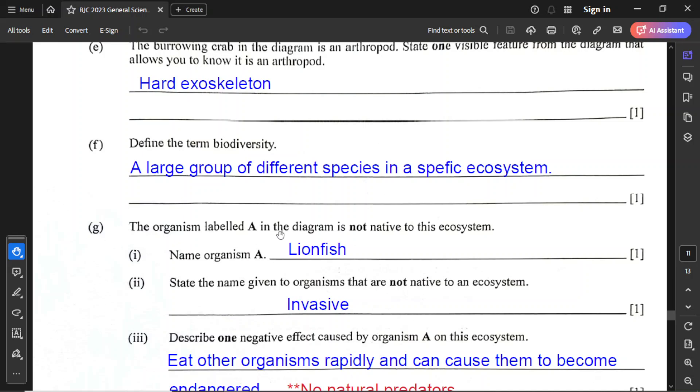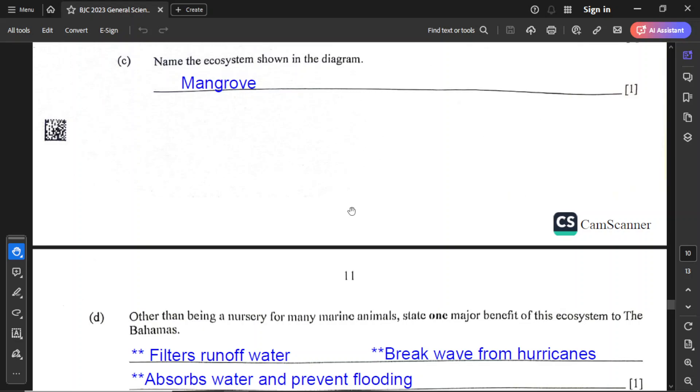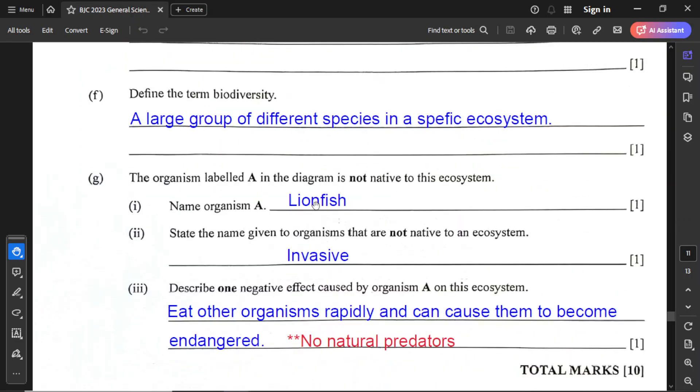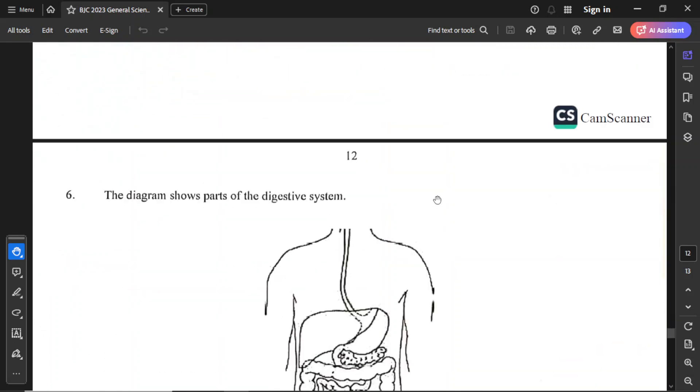For part G, the organism labeled A in the diagram is not native to the ecosystem. Name organism A, and it is a lionfish. You could go back to the diagram, and you see that the lionfish is A. State the name given to organisms that are not native to an ecosystem, and the name given to those organisms, they are called invasive. Part 3 said describe one negative effect caused by organism A on this ecosystem. Any invasive organism will eat other organisms rapidly and can cause them to become endangered. The greatest negative thing is also they have no natural predators, so they will just strive and survive rapidly and keep on producing.